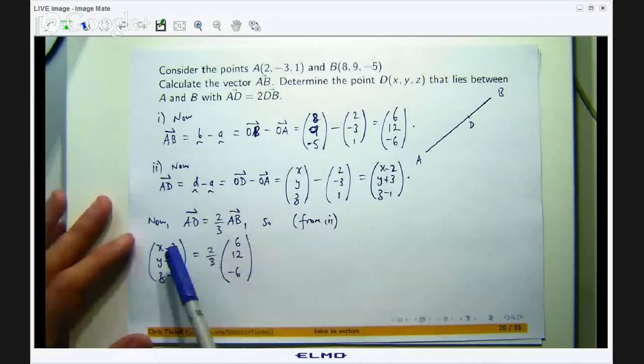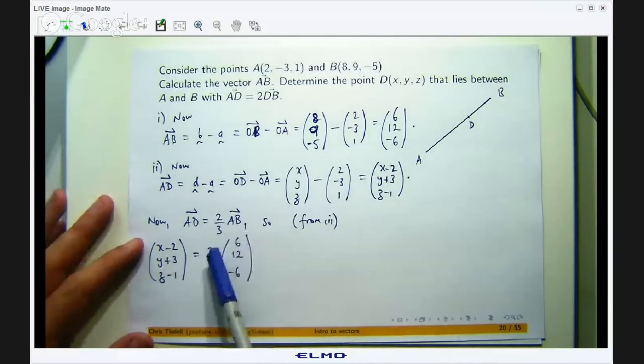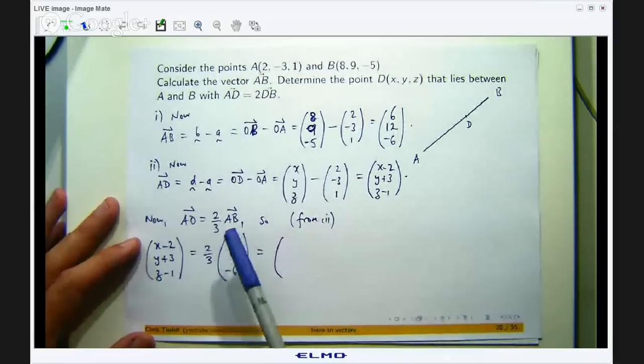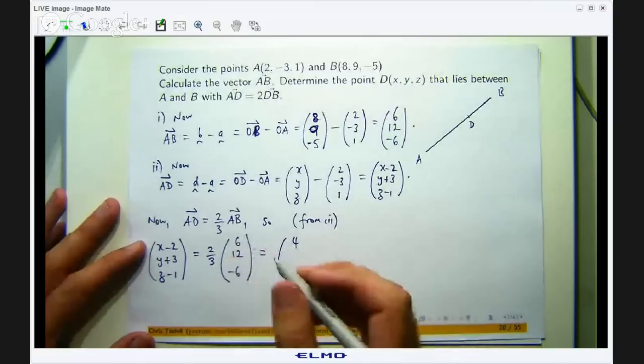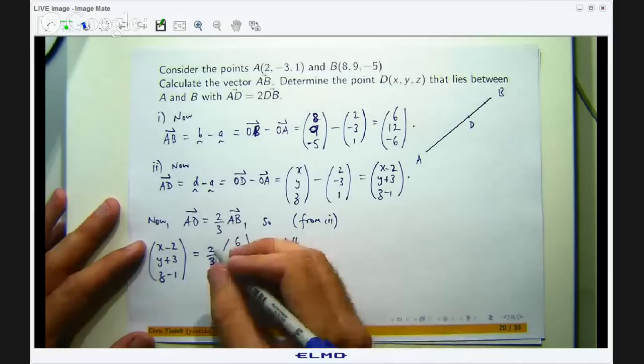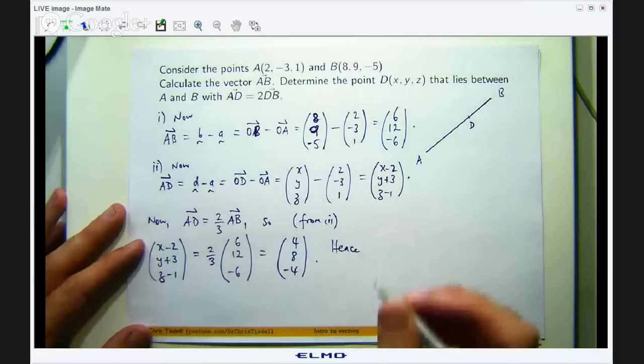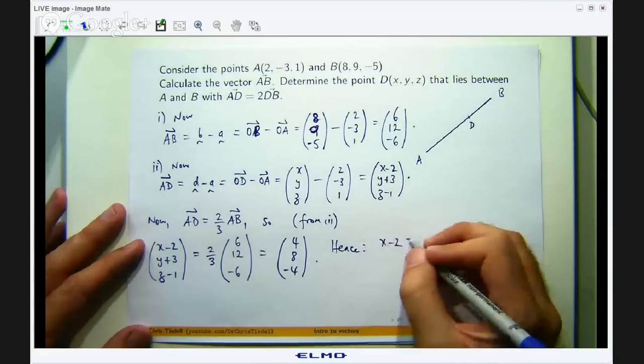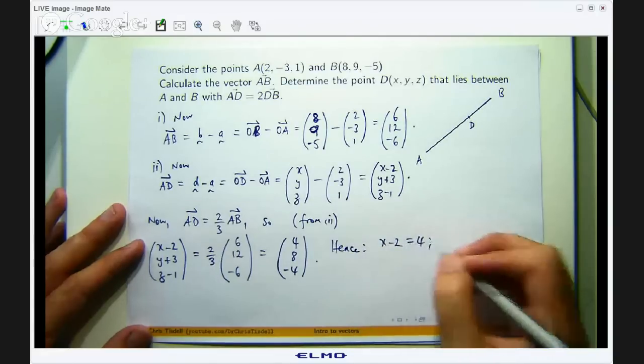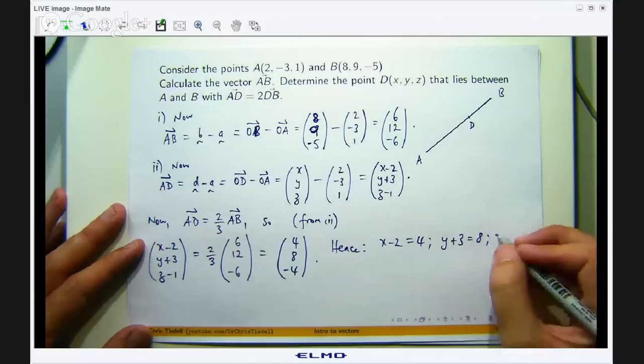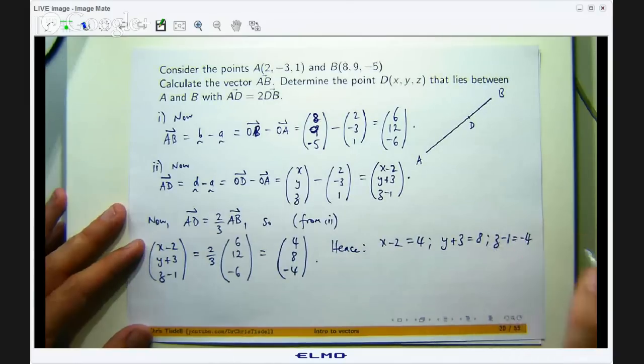So now what I want to do is basically that component is going to equal the first component after we multiply in, the second component, the second component, the third component, and the third component. So let us see if I can simplify just by multiplying this through. So 2 thirds of 6 is 4, 2 thirds of 12 is 8, and 2 thirds of negative 6 is negative 4. So that component equals that, that component equals that, etc. So then I can rearrange and solve for X, Y and Z.